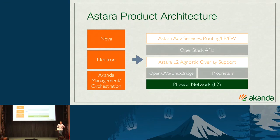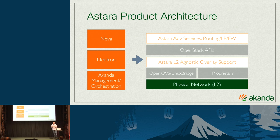Looking at the ASTARA architecture: on the left-hand side you'll see Nova, Neutron, Aconda, and ASTARA running within the control plane. On the right-hand side is a more traditional network stack — physical network, overlays managed by OVS, Linux Bridge, or some proprietary system. ASTARA has an agnostic layer so that from ASTARA's perspective, we don't really care what the L2 system is. This comes back to the network principles we've used for a very long time: honor the different layers within the networking stack, which makes it easy to mix and match and switch out components.